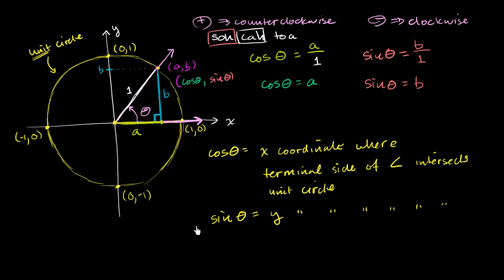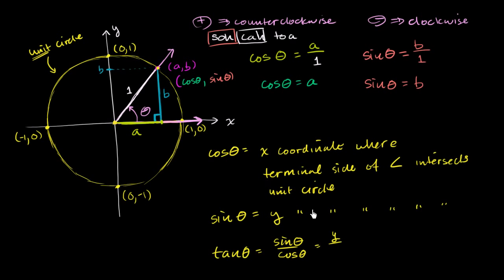What would be a reasonable definition for tangent of theta? Tangent of theta, even with SOH CAH TOA, can be defined as sine of theta over cosine of theta, which in this case is just going to be the y-coordinate where we intersect the unit circle over the x-coordinate. In the next few videos, I'll show some examples where we use the unit circle definition to start evaluating some trig ratios.